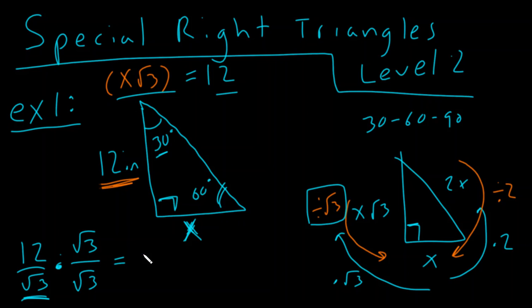12 times the square root of 3 is 12 square roots of 3. That's easy. But on the bottom, anything times itself is really being squared. So, the square root of 3 times the square root of 3 is really the square root of 3 squared. Well, guys, what do we know about square and the square root? They are opposites, and they cancel. So, this really becomes 12 square roots of 3 over 3.